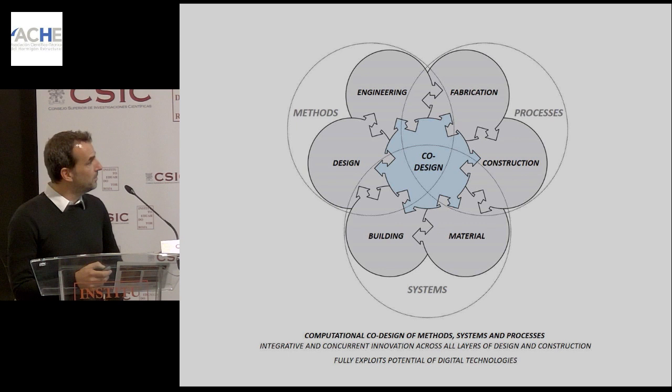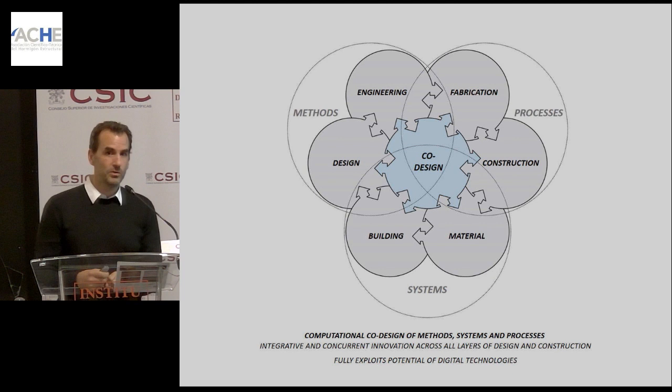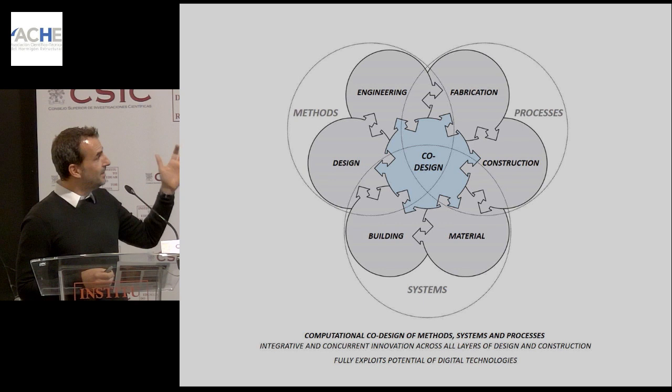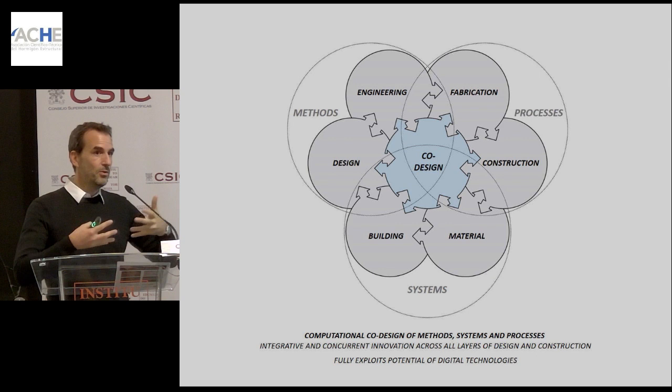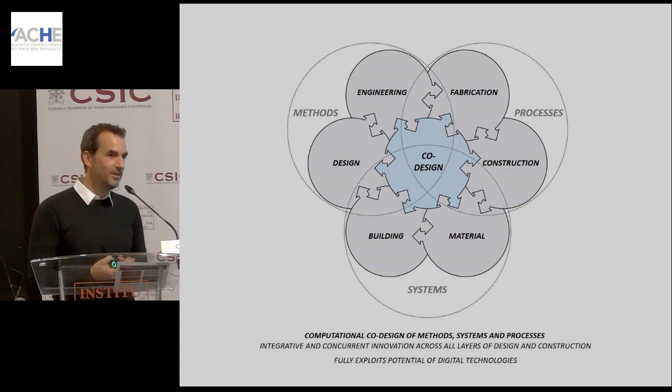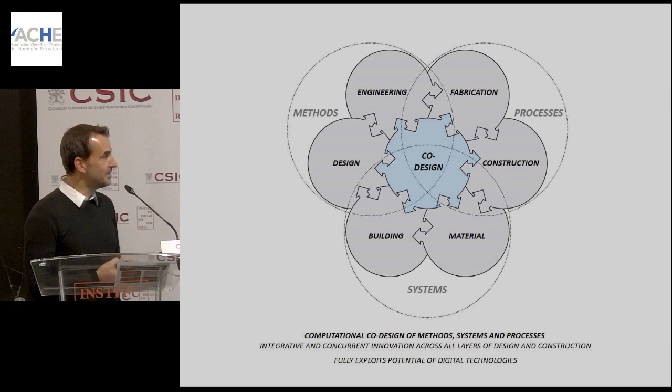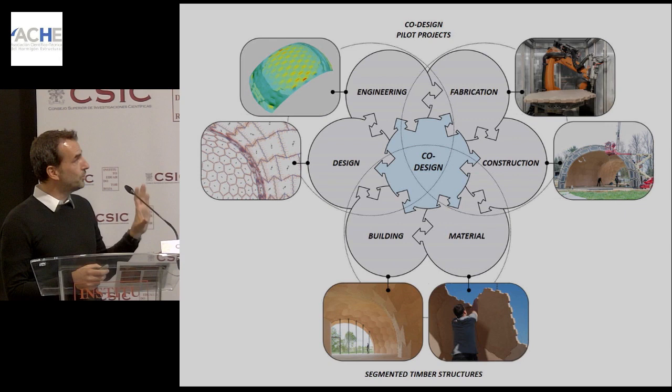The way we approach this is with a methodology we call co-design. Before you actually design a project, you need to design the feedback between your design and engineering methods, your fabrication and construction processes, and your material and building systems. If you look at those in direct interrelation and feedback with each other, you can tap the full potential of digital technologies for a higher level of integration. I will show this along two examples.